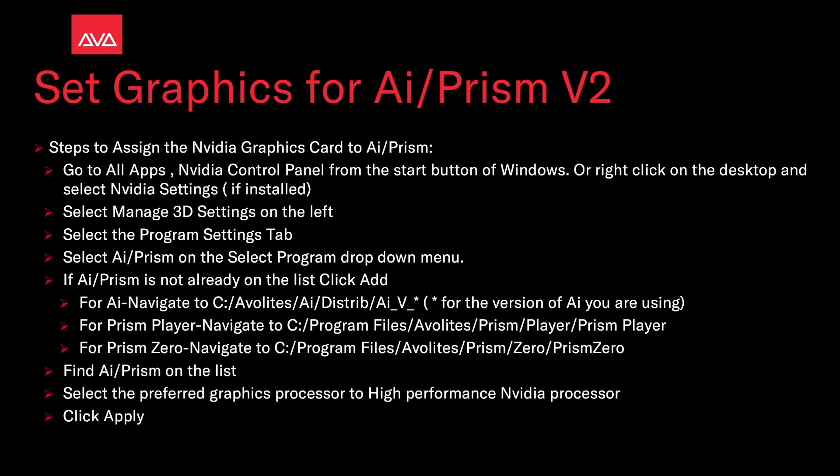Steps to assign the NVIDIA graphics card to AI or Prism: Go to All Apps > NVIDIA Control Panel from the Start button in Windows, or right-click on the desktop and select NVIDIA Settings if you have that installed. Then select Manage 3D Settings on the left, and select the Program Settings tab.